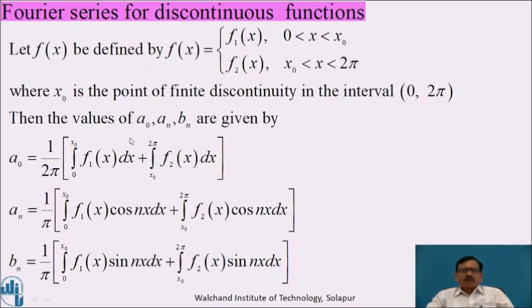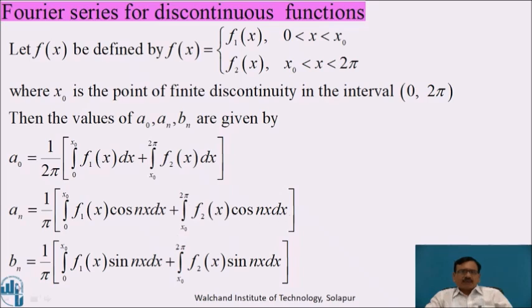Now we will see Fourier series for discontinuous functions. Let f(x) be defined as f₁(x) for 0 < x < x₀ and f₂(x) for x₀ < x < 2π, where x₀ is a point of finite discontinuity in [0, 2π]. Then: a₀ = (1/2π)[∫₀^(x₀) f₁(x) dx + ∫_(x₀)^(2π) f₂(x) dx], aₙ = (1/π)[∫₀^(x₀) f₁(x) cos nx dx + ∫_(x₀)^(2π) f₂(x) cos nx dx], and bₙ similarly with sin nx.